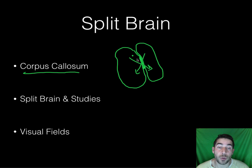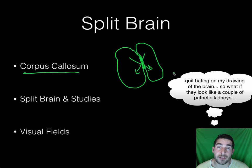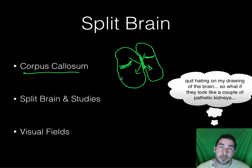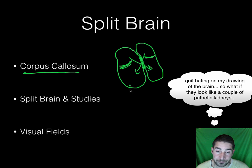How your brain works is that the left side controls the right side of your body. That's with your motor cortex, which is right about here on your brain, your senses, et cetera. So there's a lot of action going on here.